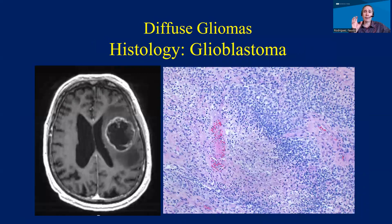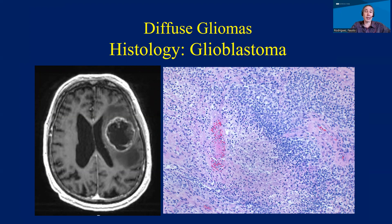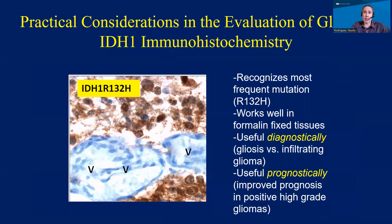Then we have tumors that have, in addition to those features, necrosis. And that's really one of the main characteristics of glioblastoma, which is one of the highest grade and most aggressive tumors that can be encountered in the brain and in the body.